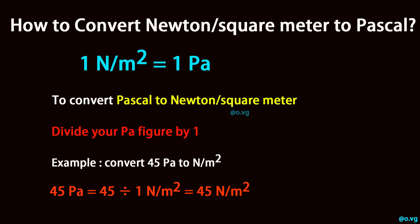To convert pascal to newton per square meter, divide your pascal figure by 1. For example, convert 45 pascal to newton per square meter: 45 divided by 1 equals 45 newton per square meter.